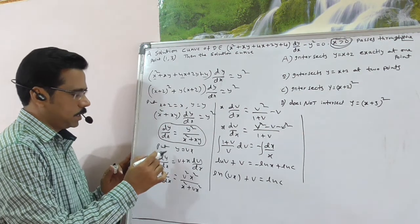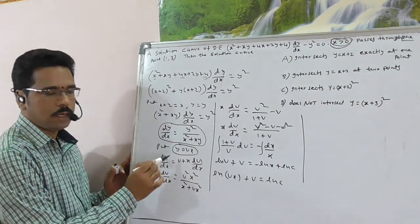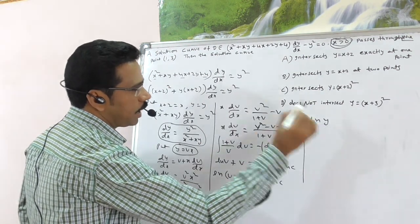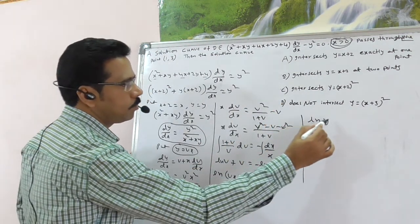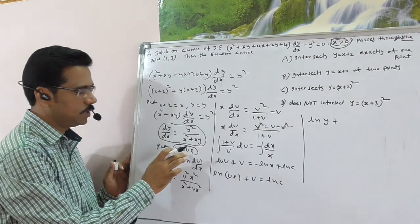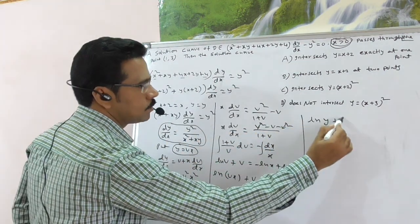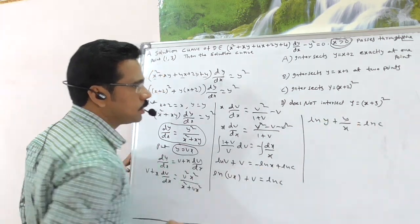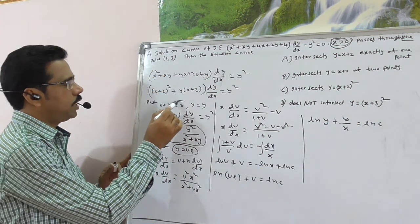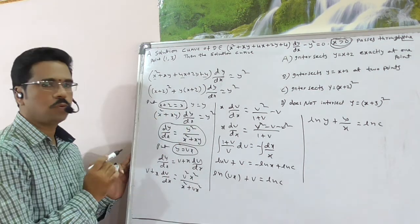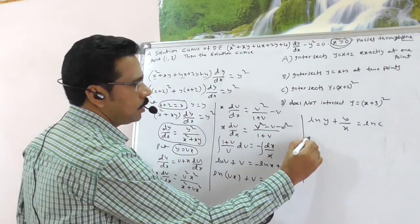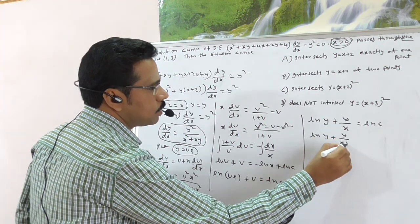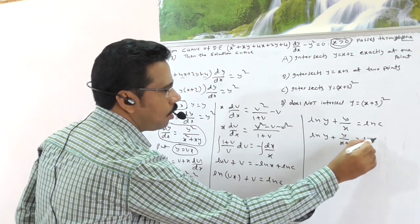Since VX = Y, this becomes log Y + Y/X = log C. Now replace back X with x+2 (from our earlier substitution). The general solution curve is: log Y + Y/(x+2) = log C.